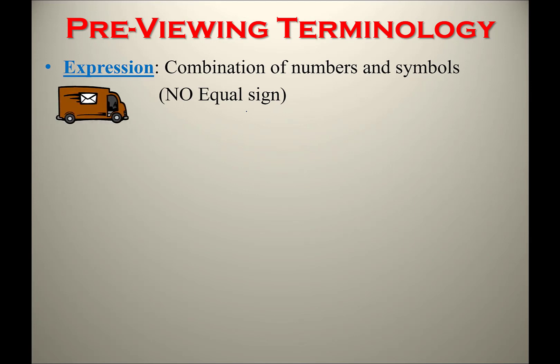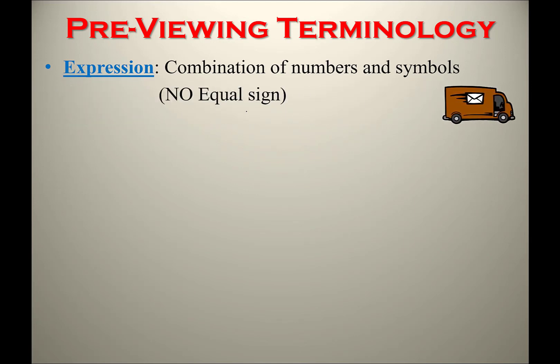Some vocabulary: an expression is a combination of numbers, symbols, and operations combined together to create a statement with no equal sign. For example, 2x plus 3 is an expression, or x squared minus 7. You can have three or four terms — what matters is that you have numbers, symbols, and operations but no equal sign.